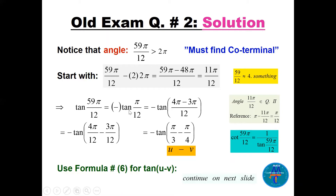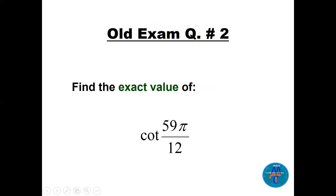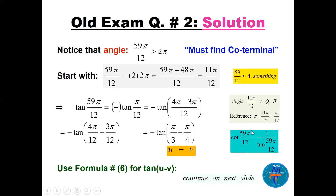π/12 is not a special angle by itself, but we can write it as (4π − 3π)/12 = π/3 − π/4, since 12 = 3×4. This gives us −tan(π/3 − π/4), which involves two special angles. The question asks for cotangent, which is 1 over tangent, so we apply the tangent difference formula.